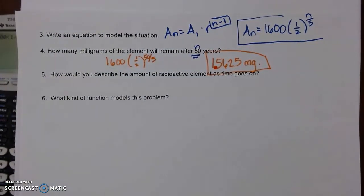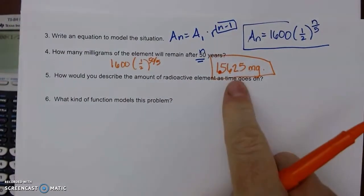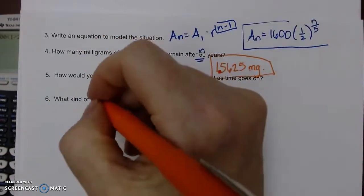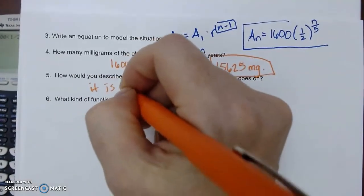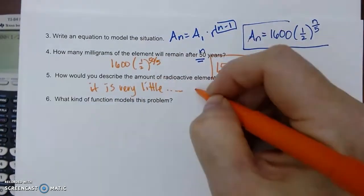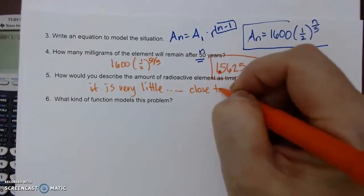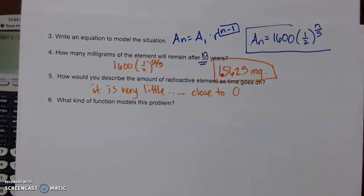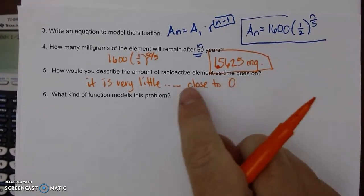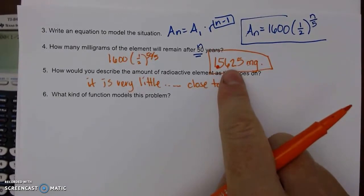How would you describe the amount of radioactive element as time goes on? Well, after 50 years it's only like one milligram, so it is very little. I'm going to say close to zero as you keep going, because then I'll take five years later, I'll take half of that, five years later half of that.